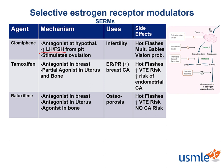Raloxifene is a SERM that is also an antagonist at the breast and also has increased risk of thromboembolic events in smokers, but what makes it unique is that it has estrogen agonist properties on bone without the effects on the endometrium. It reduces bone resorption, making it an effective treatment for osteoporosis. Like tamoxifen, it is an antagonist on breast tissue, so it is also used for invasive breast cancer, but only in post-menopausal women.